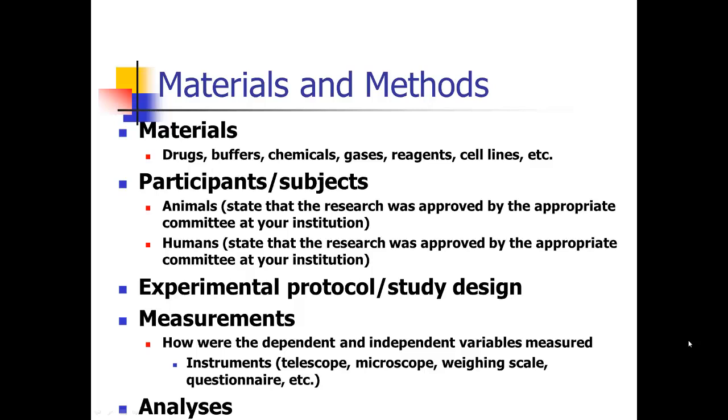You'll also have some kind of experimental protocol or study design depending on what type of study you're doing. What steps did you go through in your experiment? There's going to be something about measurements. Everybody has to measure variables no matter what discipline you're coming from. How did you measure your variables? How did you measure your dependent and independent variables? What instruments did you use? Telescopes, microscopes, weighing scales, questionnaires. And then finally, what analyses did you do? How did you analyze your data at the end of the day? Those are the basic elements. The materials and methods section will differ slightly depending on what scientific discipline you're coming from. These are your basic elements that you're looking for.